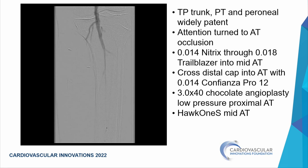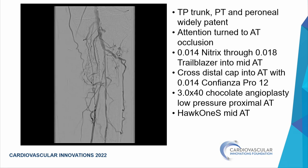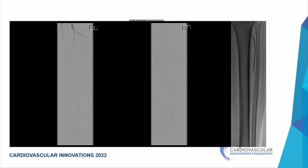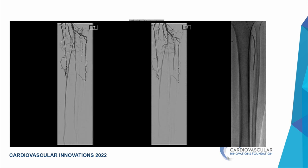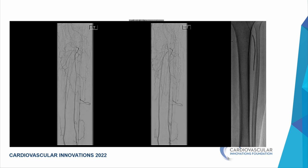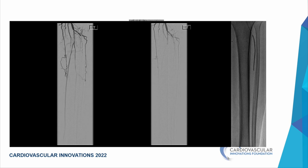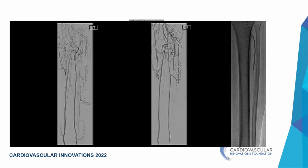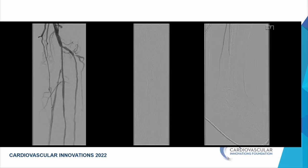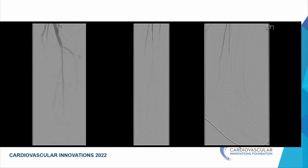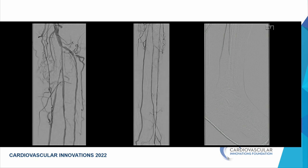We then moved the Nitrix wire through an 0.018 catheter into the anterior tibial. It crossed part way down, then required a Confianza Pro 12 to puncture the fibrotic distal cap. Even with directional atherectomy proximally, the AT bend is absolutely not a location to run any atherectomy device. A chocolate balloon was used at the bend with a nice result — moving from multiple occlusions within the TP trunk and AT to good three-vessel runoff and excellent pedal arch reconstitution.